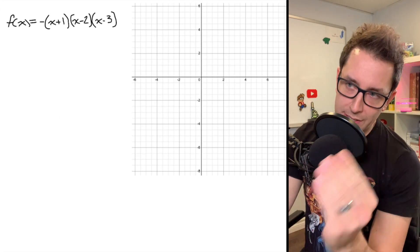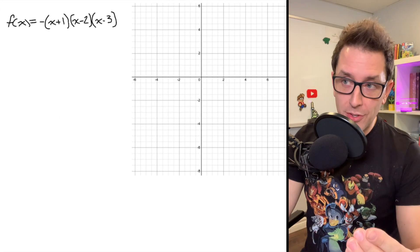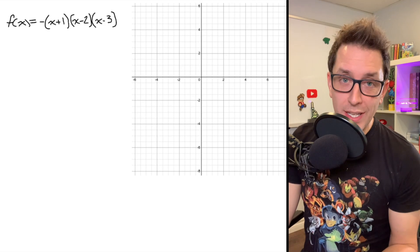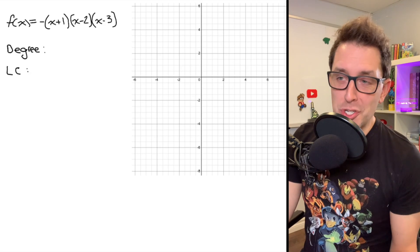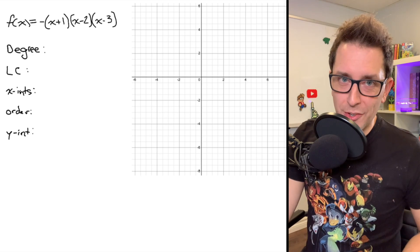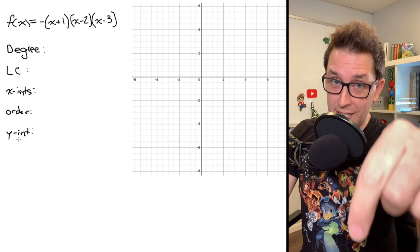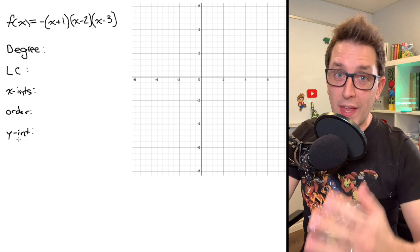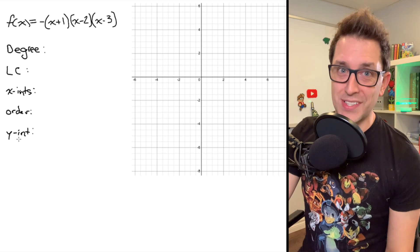Alright, in this video I'm going to walk you through how to accurately sketch a polynomial that's written in factored form like this one using its degree, its leading coefficient, its x-intercepts, the order of its x-intercepts, and its y-intercept. But before we get into it, be sure to sketch the graph of the like button down below so that other people can discover this beautiful process as well.